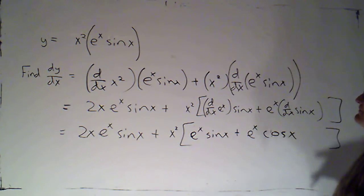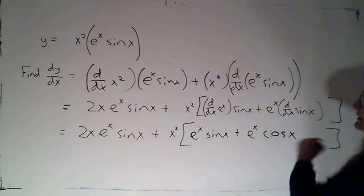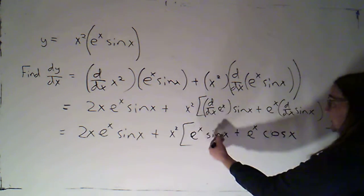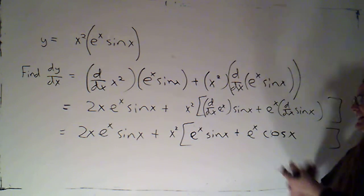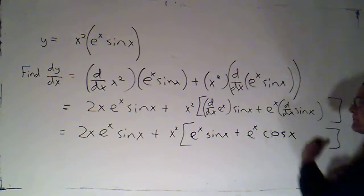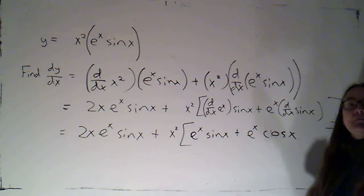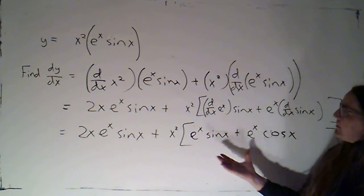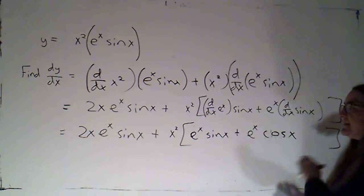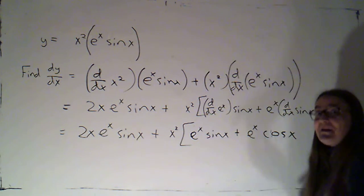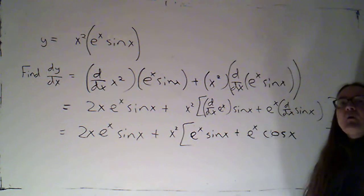At this point I've evaluated all of the derivatives. Now if I wanted to I could distribute the multiplication by x squared. Once I did that I might notice there's an e to the x in each piece and I might factor that out. There are a number of ways that I could simplify this. If we were just asked to find the derivative I'm inclined to stop. If I were going to find the second derivative or do something with this, I would let what I needed to do next motivate me for what was going to put it in the simplest form for that upcoming task.